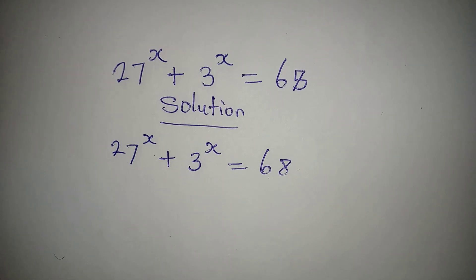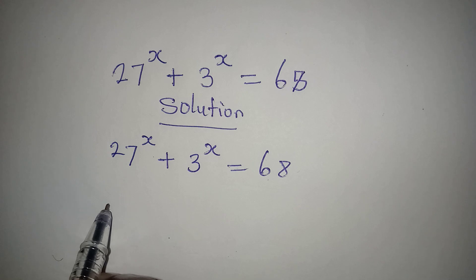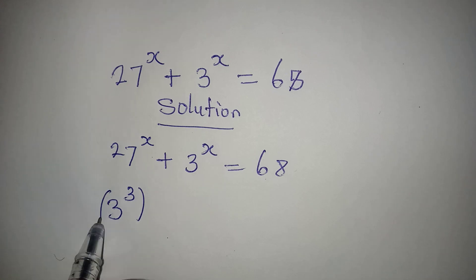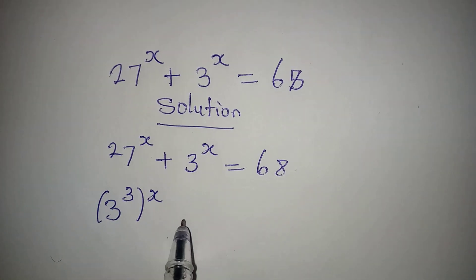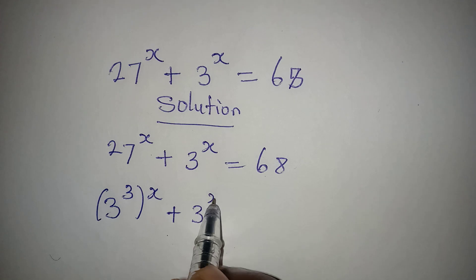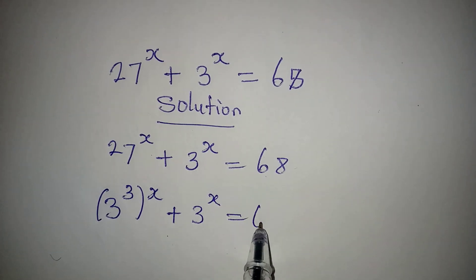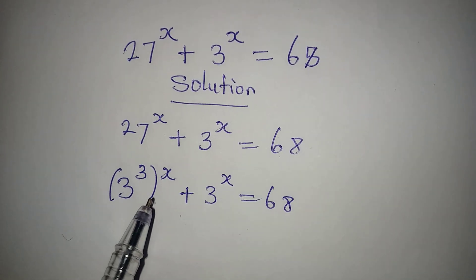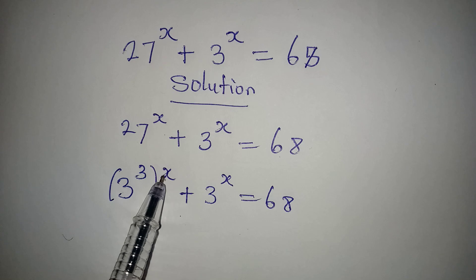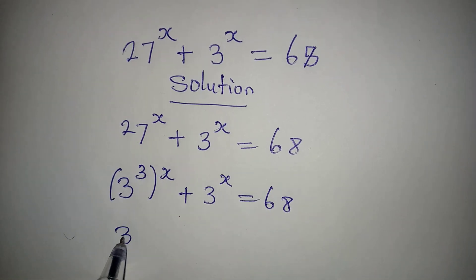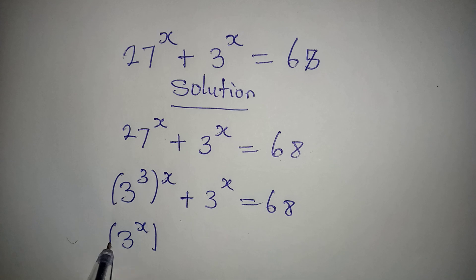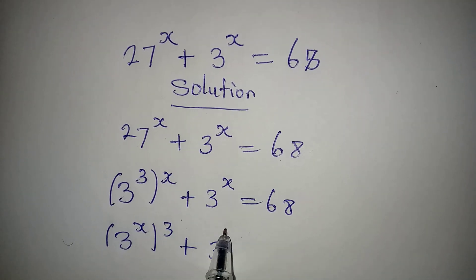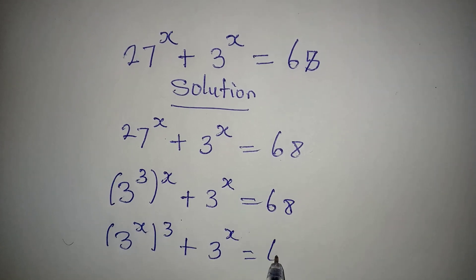Remember that this is the same thing as 3 to the power of 3, to the power of x, plus 3 to the power of x equals 68. And then according to one of the laws of indices we can change the position of this, so we have 3 to the power of x, to the power of 3, plus 3 to the power of x equals 68.